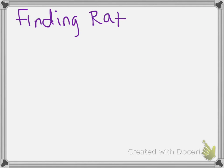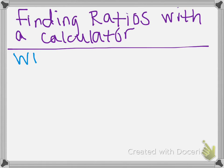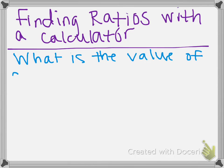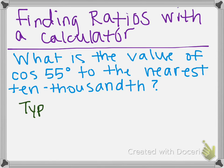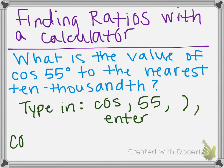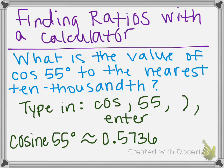The next thing I am going to show you how to do is find a ratio with your calculator. We are going to find what is the value of cosine of 55 degrees to the nearest ten-thousandth. We are going to do this by typing into our calculator — type in cosine, then put 55 for our 55 degrees. You have to make sure you have a parenthesis on the other side, because if it is not enclosed, you are not going to get the correct answer. So it should be cosine and then 55 in parentheses. When you hit enter, you will get a decimal. You should end up with cosine of 55 degrees being approximately 0.5736.